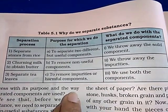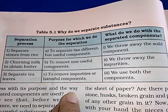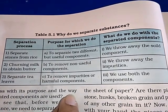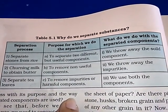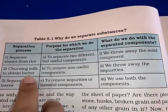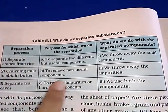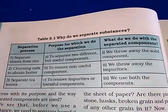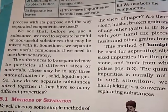To separate stones from rice: we separate two different but useful components, and we throw away the solid impurities. Churning milk: to obtain butter, we remove non-useful components and throw away the impurities. Separating tea leaves: to remove impurities or harmful components, we use both the components. You have to match each separation process with its purpose and what we do with the separated components.